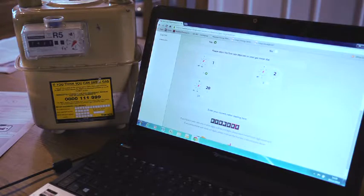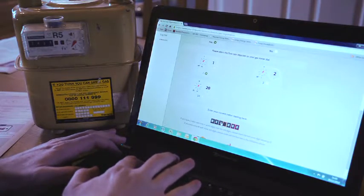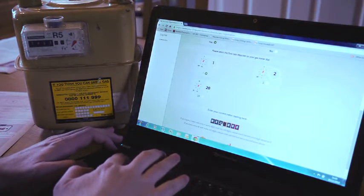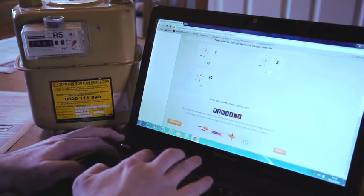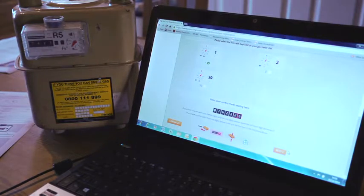The system then asks for the meter reading, so we can go in there. This meter is showing 7, 4, 2, 3. Having put in your meter reading, you can click next.